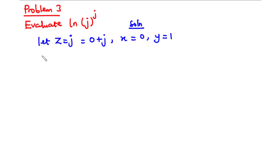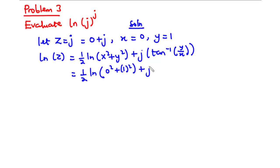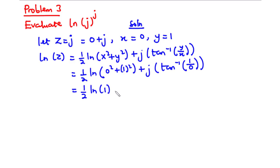Proceeding with equation 3: ln of z equals one-half times ln of (x squared plus y squared) plus j times tan inverse of y over x. Substituting x equals 0 and y equals 1: we get one-half ln of (0 squared plus 1 squared) plus j times tan inverse of 1 over 0. Since 1 over 0 is infinity, tan inverse of infinity equals pi over 2.